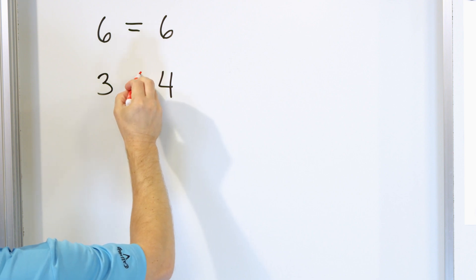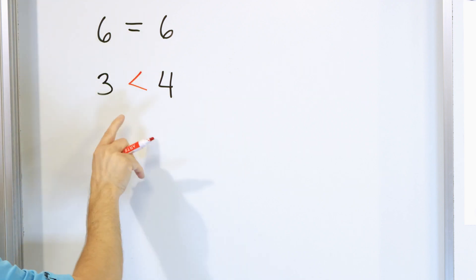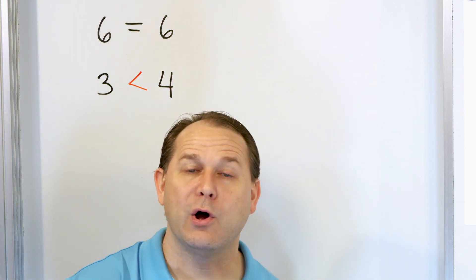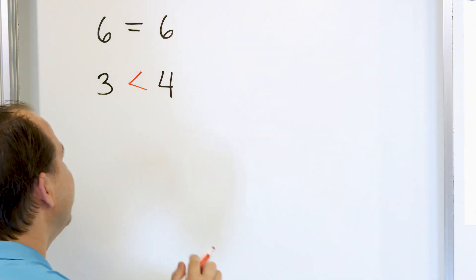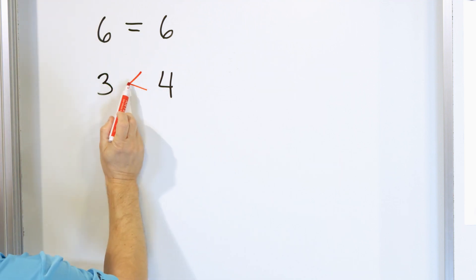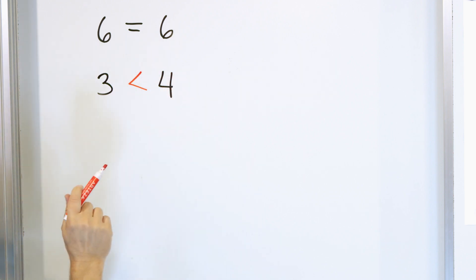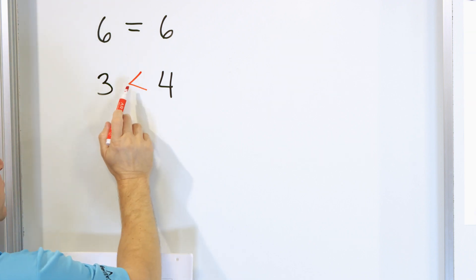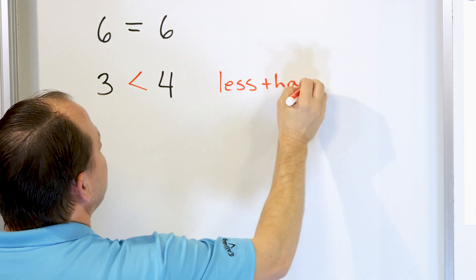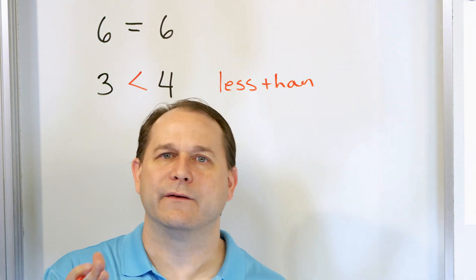We put a little arrow, kind of like a little mouth. You can think of it as a mouth eating something, but it's a little arrow and the arrow always points to the smaller number. So this is saying that three is less than four because the arrow is always pointing to the smaller number, and the big side always opens up to the bigger number. When the arrow is pointed this way, we call it less than. So we say three is less than four.